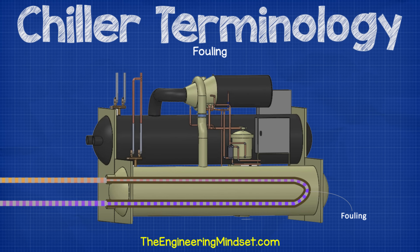Fouling. This refers to the buildup of dirt and organic substances on the surface of heat exchangers, which effectively insulates the surfaces and reduces the heat exchangers' ability to transfer heat. This is very common in the condenser of a water-cooled chiller because of the open circuit, which permits dirt and bacteria to enter the pipework. Good water treatment and monitoring over time should be implemented to reduce this. Chillers are designed to withstand a certain amount of fouling under normal operating conditions, but if this is exceeded, then the chiller will be unable to reach its design capacity.